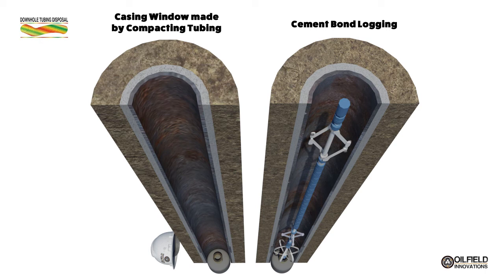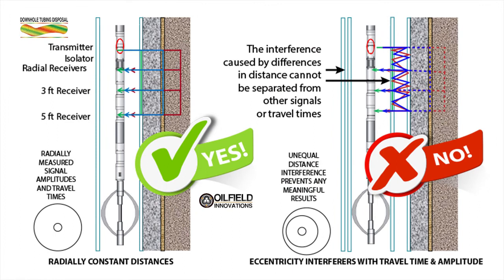It's important to understand that conventional cement bond logging tools cannot log the cement casing with the tubing in the way. Cement bond logs bounce a signal from a transmitter to a receiver and therefore must be centrally located within the well bore. Any intervening tubing, which is normally eccentric, causes such signals to be erratic. Therefore it's not possible to perform conventional cement bond logging unless you first move the tubing out of the way by either pulling it from the well or compacting it. That means that if you want to meet the regulatory requirements and guidelines of, say, Oil and Gas UK, you must move the tubing using a rig, hydraulic workover unit, or our method of downhole tubing disposal with slick line or coil tubing.